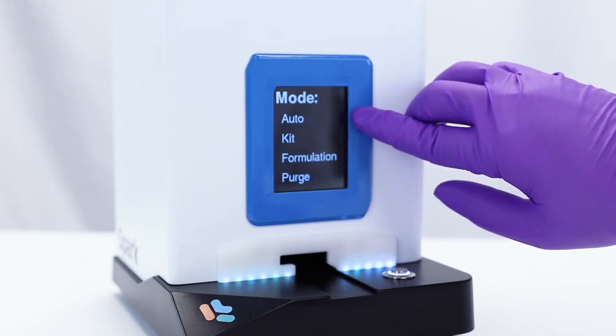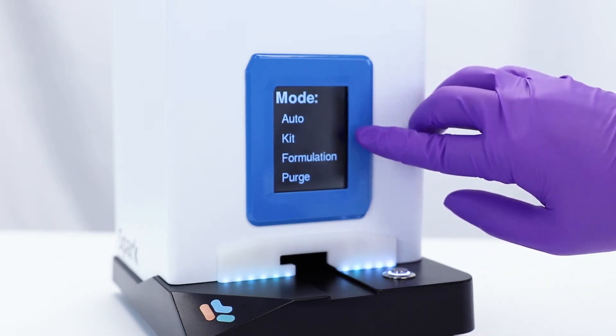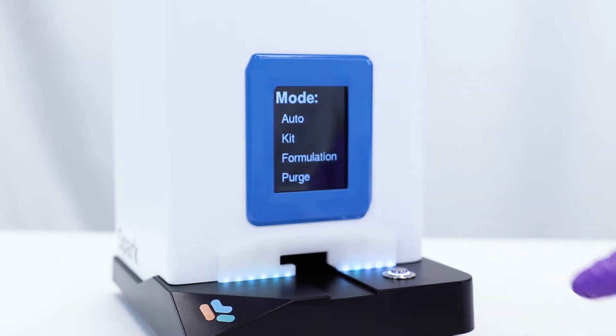The first mode is Auto. In this mode, the Spark reads a cartridge and enters Kit Mode or Formulation Mode automatically based on the cartridge programming.